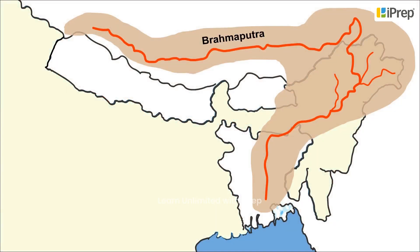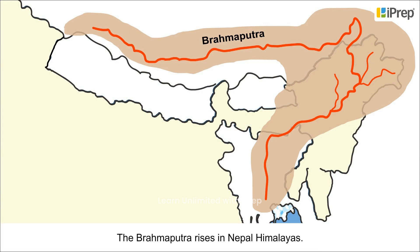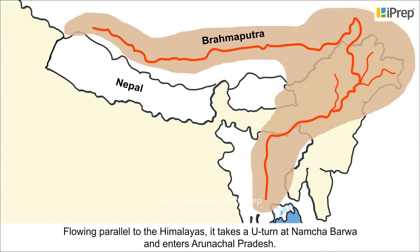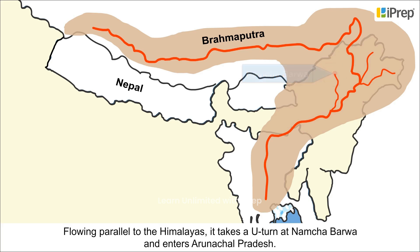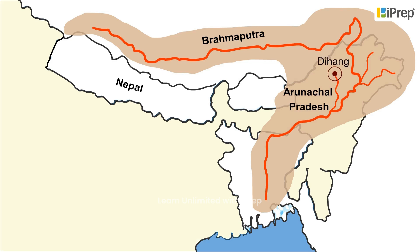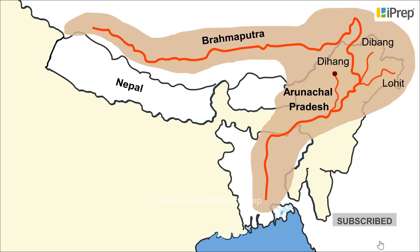The Brahmaputra River System: The Brahmaputra rises in the Tibet Himalayas. Flowing parallel to the Himalayas, it takes a U-turn at Namcha Barwa and enters Arunachal Pradesh. It is called Dihang at this point. After major tributaries like Dibang and Lohit join it, it takes the form of Brahmaputra in Assam.